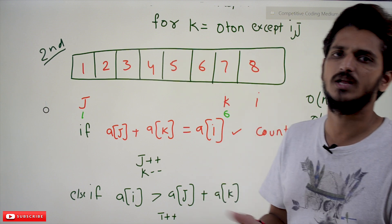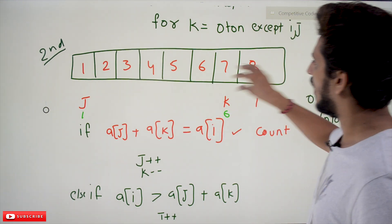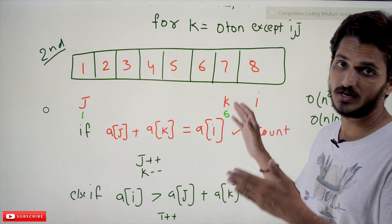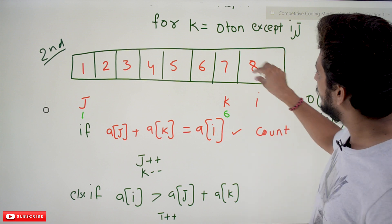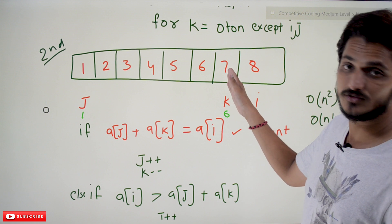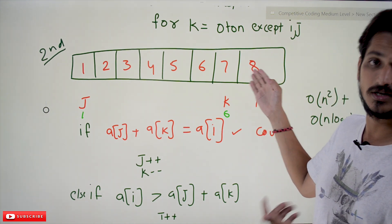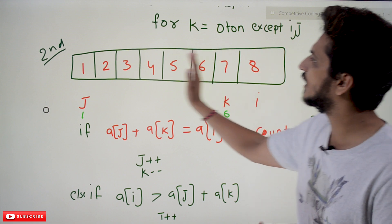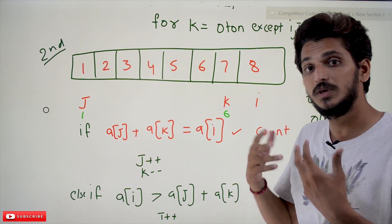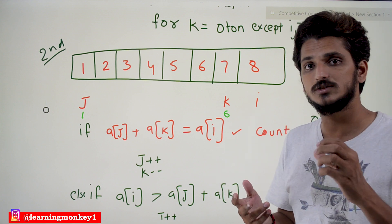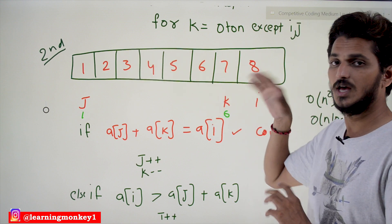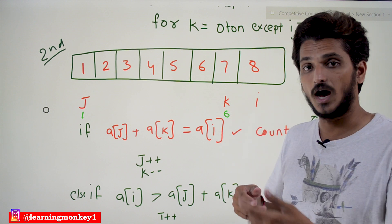The use of sorting is: after sorting, if you take element 8, all elements to its left are smaller. If you want to find a pair that sums to 8, you can take any combination of elements to its left. If you want a pair summing to 7, you don't consider 8 because it's greater. This sorted property helps narrow down combinations efficiently and may be helpful in other problems too.